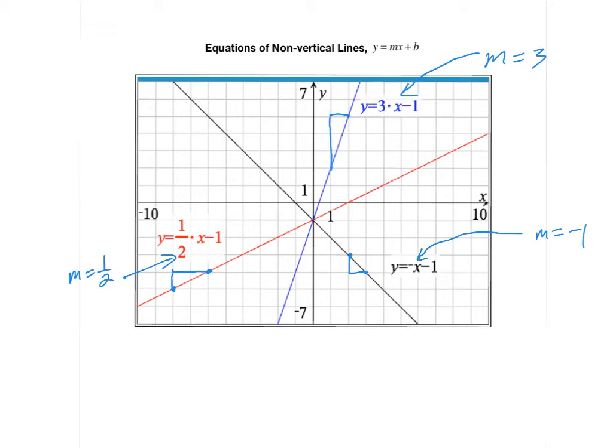So the number that x is being multiplied by when y is isolated is the slope of the line. Let's now analyze these three lines for another common feature. Notice that all three of them cross right at this specific point right here. They all cross at the same exact point on the y-axis. From previous studies, we know that the point at which a line crosses the y-axis is called its y-intercept. So each of these three lines has a y-intercept of 0, negative 1.